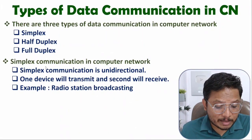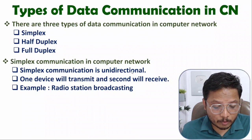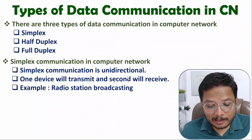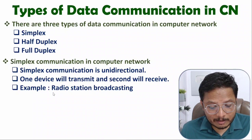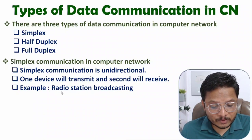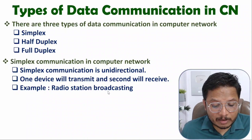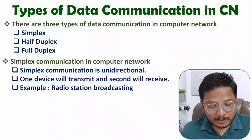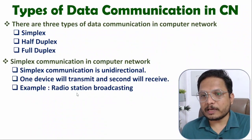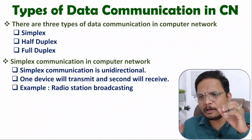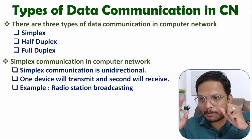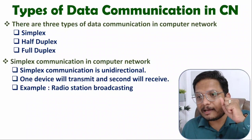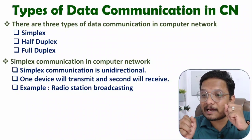When it comes to simplex communication, that is unidirectional — one device will transmit data and another will be receiving data. The receiving device can be multiple devices. For example, in radio station broadcasting, the station sends data and there can be multiple receivers. Receivers cannot send data back to the radio station; they only receive.